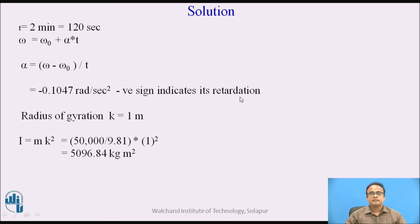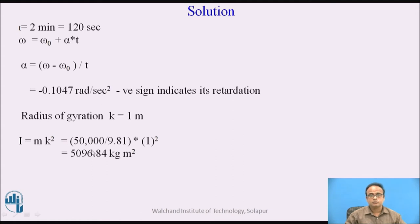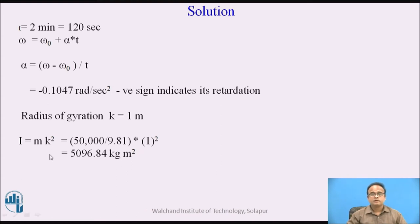The negative sign indicates retardation. Radius of gyration k equals 1 meter. The mass moment of inertia I equals m k squared, which equals 50,000 divided by 9.81 into 1 squared. The weight is given as 50 kN, so multiplying by 1000 gives 50,000 N. Mass equals weight divided by g (9.81). Therefore, mass moment of inertia is equal to 5096.84 kg·m².